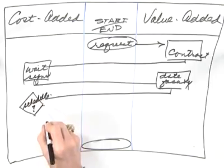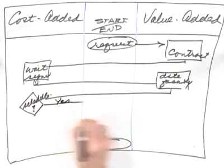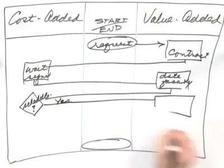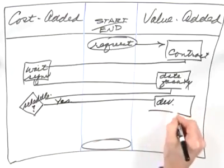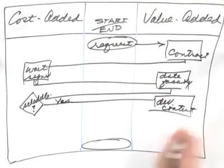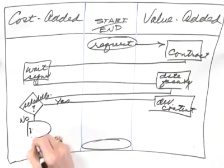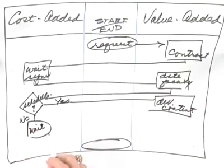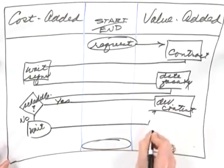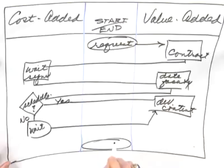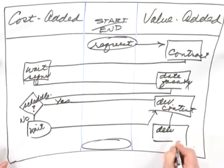If the answer is yes, we proceed to add value by developing the program and the content. And we'll just say develop content at this point. But if the answer is no, what do you do? You now have to wait until we're able to come up with dates that match faculty and the requesting organization. At some point that is resolved and you come back, finish developing the content and you move on to actually deliver the program.